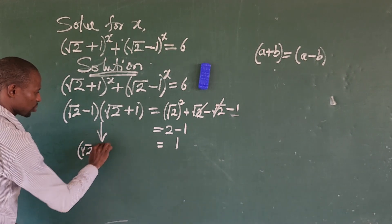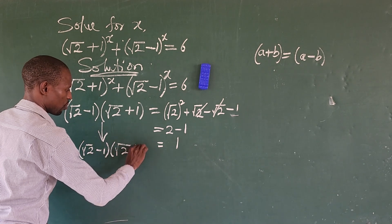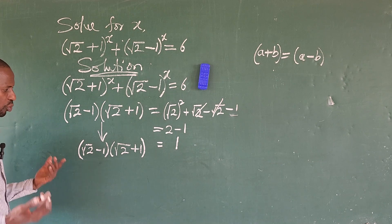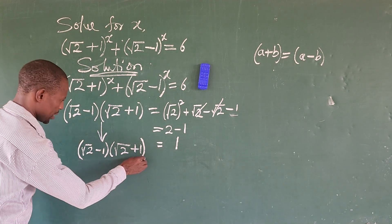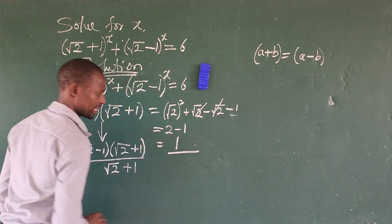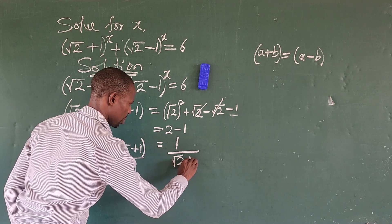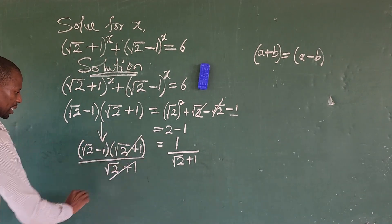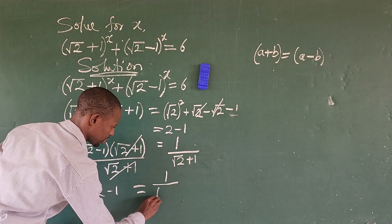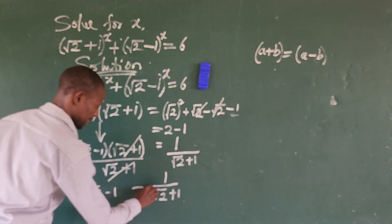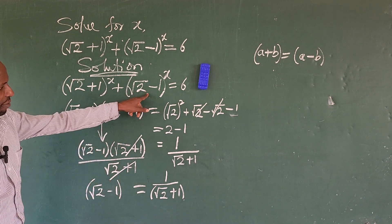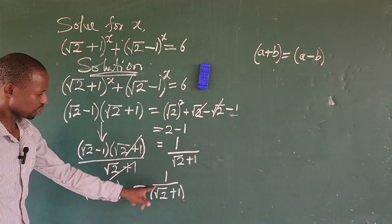So coming down with our result, we have (√2 - 1)(√2 + 1) = 1. Now I want to make (√2 - 1) the subject of the formula. Dividing both sides by (√2 + 1), this gives us: √2 - 1 = 1/(√2 + 1). So (√2 - 1) can be replaced with 1/(√2 + 1).